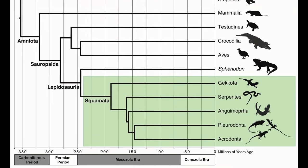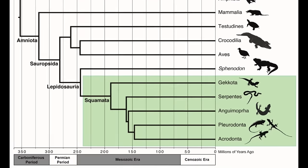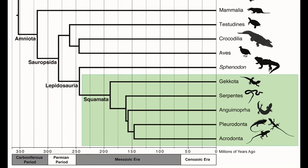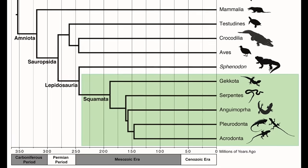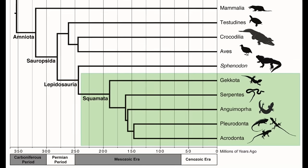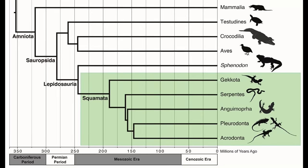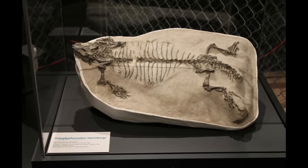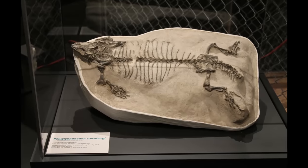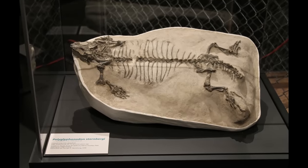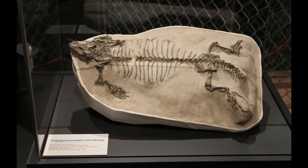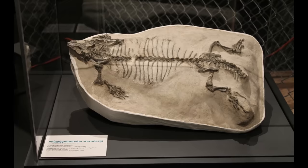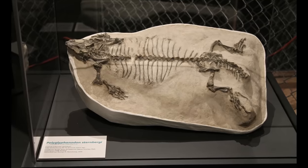Over the course of this period, the ancestors of modern Iguanians, Varanoids, Snakes and many other groups emerged, including a variety of forms that are now extinct. These included the Polyglyphanodontians, a highly diverse group possibly closely related to living taids, and definitely deserving a future video on this channel.